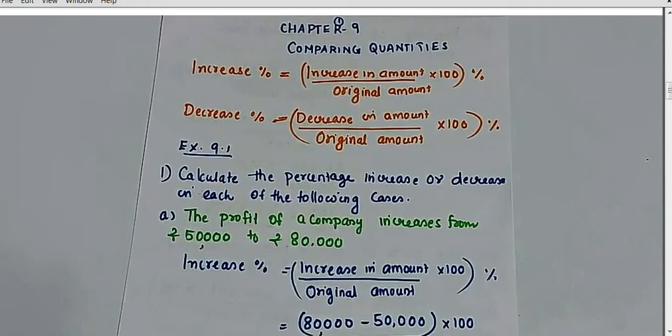First we have to learn two formulas. Number one: increase percentage. Number two: decrease percentage. In this chapter on comparing quantities, these two formulas are what you need to remember. Number one is increase percentage, number two is decrease percentage. All the questions in 9.1 will be based on these two formulas.